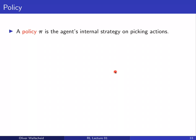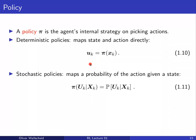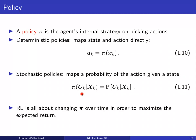The policy pi is the agent's internal strategy for picking actions. Mathematically, in the deterministic case it maps the current state directly to an action; in the stochastic case it defines a probability distribution over actions given the current state. The stochastic form is useful in exploration scenarios. Changing that mapping of states to actions via the policy pi in order to maximize the long-term expected reward is what reinforcement learning is fundamentally about.